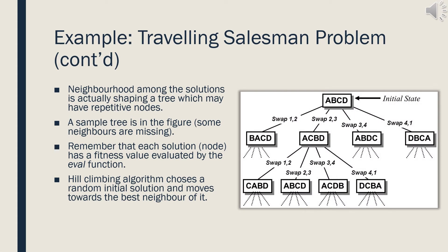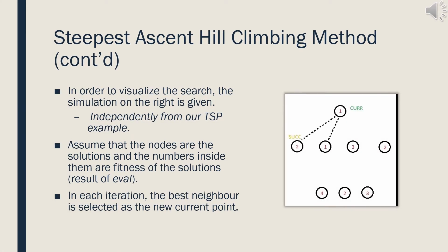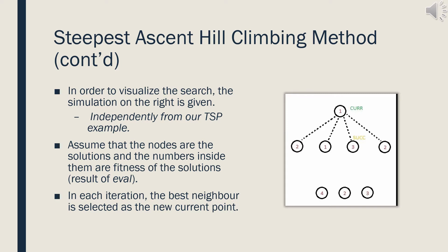Neighbors of ABCD are actually shaping a tree, which may have repetitive nodes, or shaping a graph. A sample tree is shown in the figure; some neighbors are missing here. Also, remember that each solution, or node, has a fitness value evaluated by the eval function. The hill climbing algorithm chooses a random initial solution and moves towards the neighbor with maximum fitness value. A simulation is given on the right-hand side to visualize the search, where the numbers inside the nodes are the fitness values. The best neighbor is selected as the new current point in each iteration.